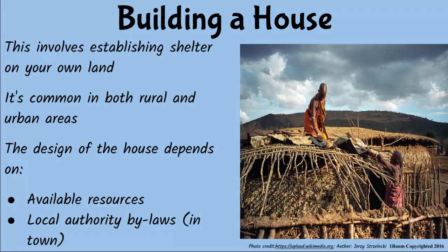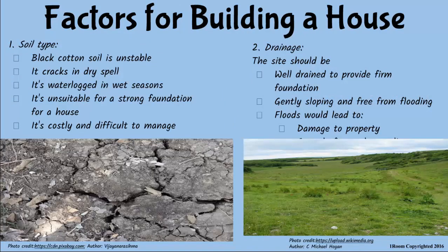I was coming to that. And yes, geographical factors, such as soil type and drainage, should be considered when choosing a site for a house. Some soils, like black cotton soils, have clay and hence become waterlogged in wet seasons, and thus difficult and expensive to construct a house on. Poorly drained areas lead to flooding, which destroys houses. Therefore, a house should be built on a well-drained site and soil, which provide a strong foundation.